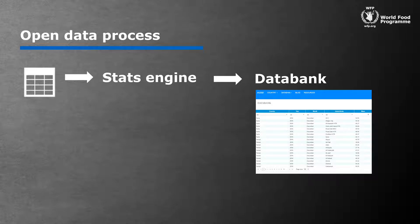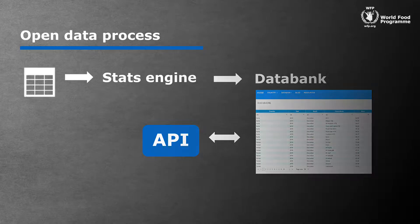That data bank is linked to an application program interface — an API — and that helps us share our data with machines all over the world. So if you're a partner of WFP, you can hook up to the API and download our data at will. That's quite cool. So all these public users or other organizations — does that mean you can work more closely with them, considering they're able to use your data automatically?